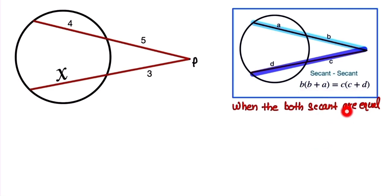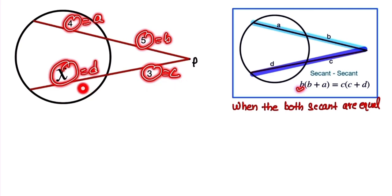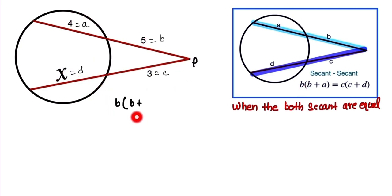So here, b is equal to 5, and here 4 is equal to a, and this one is equal to c, and x is equal to d. So here, b times b plus a is equal to c into c plus d. So here the value of b is equal to 5, and 5 plus 4, here c is equal to 3, and here is 3 plus x.